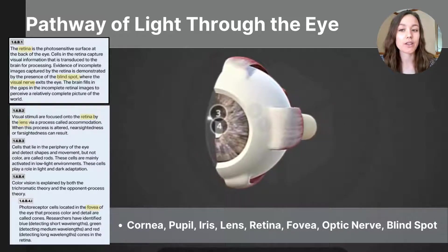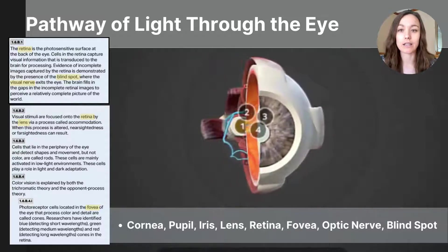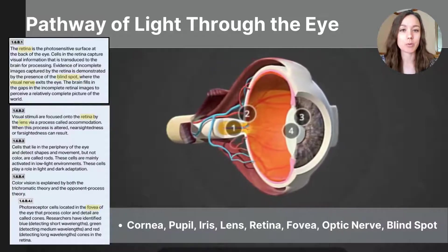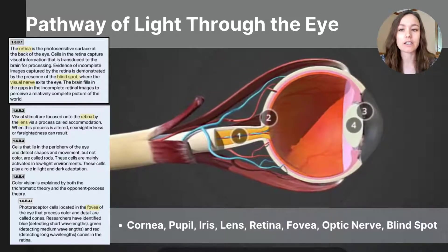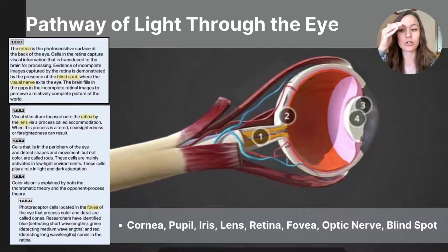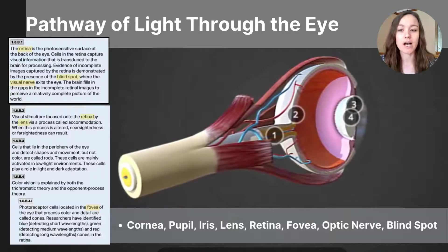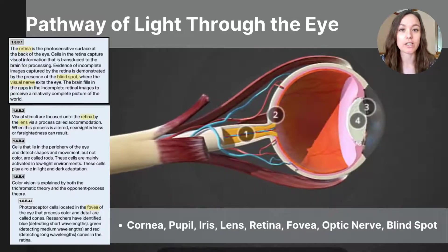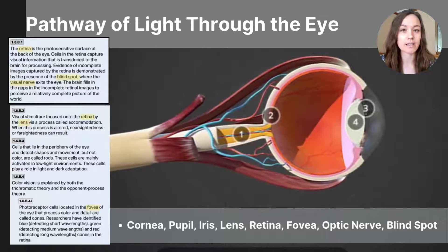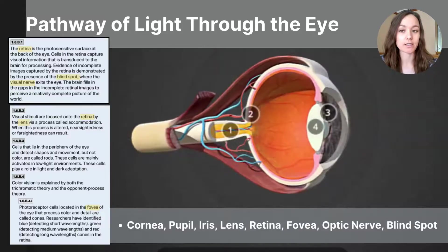Let's start with light as it enters the eye. The light enters through the cornea first. The cornea is not labeled on this particular diagram, but you can still see it. The cornea is a transparent dome-shaped structure that covers the outer surface of the eye. It is the first part of the eye to encounter light, and it bends light into the eye and begins to focus it.